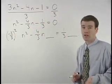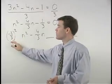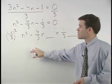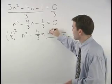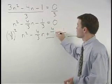So we have negative 2 thirds squared. And when squaring a fraction, square both the numerator and the denominator. So we have positive 4 ninths, which we add to both sides of the equation.